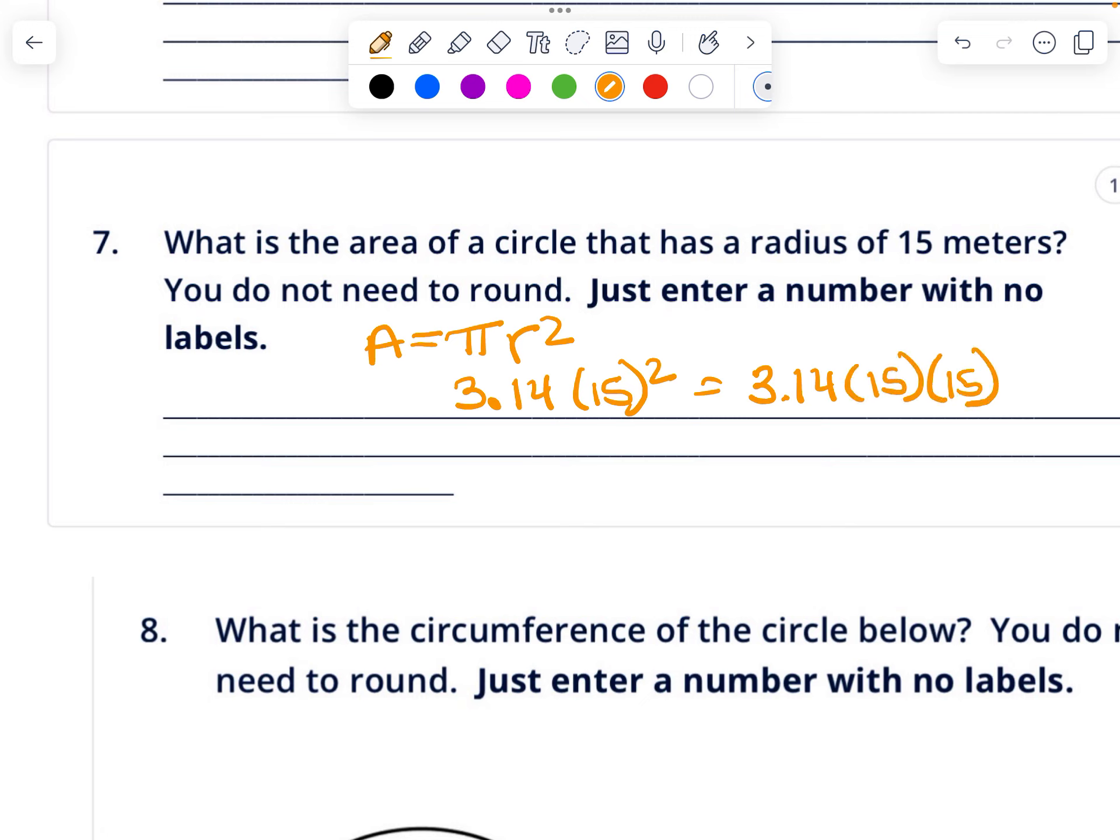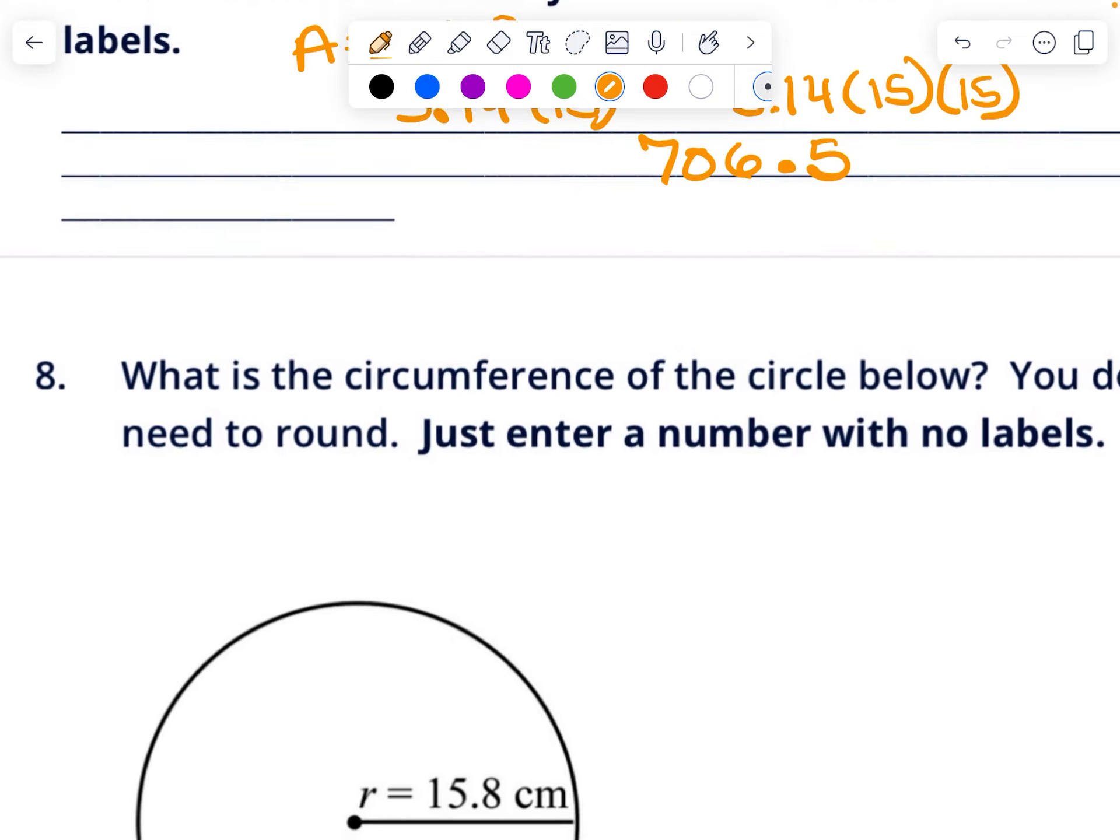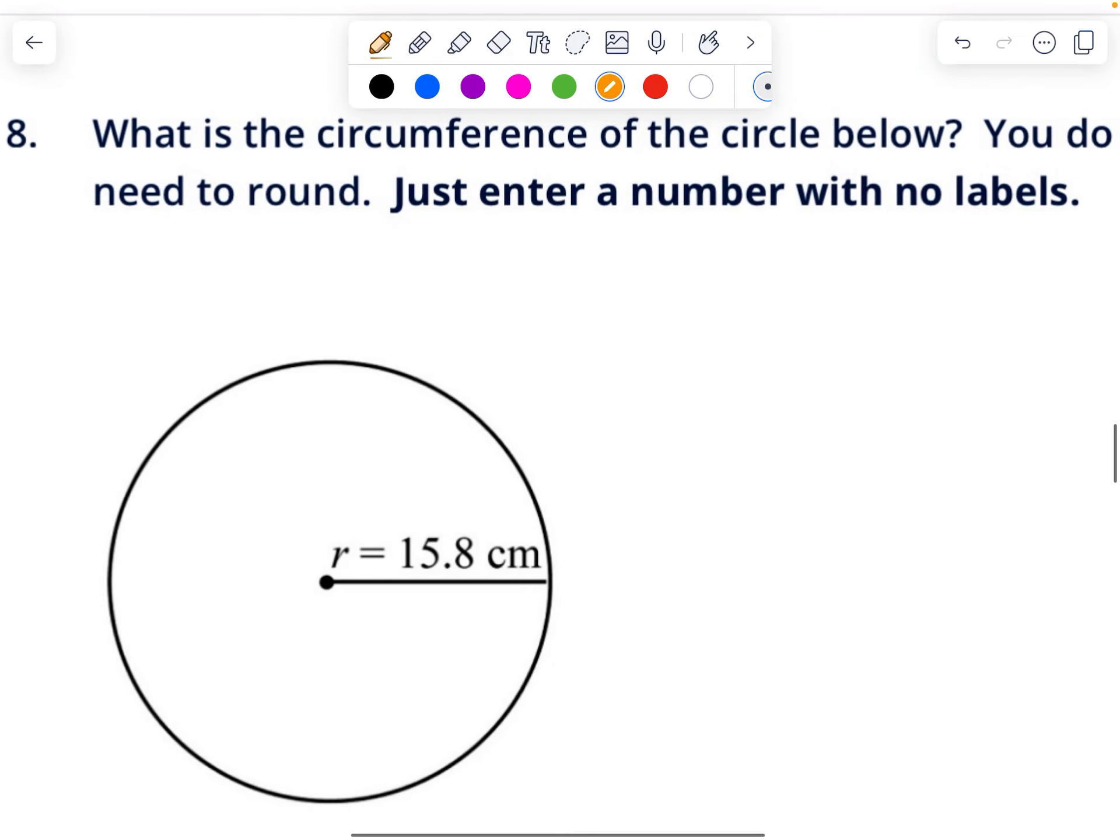What is the circumference of this circle? We talked about the formula already, it's pi times diameter. This though is radius. The diameter, which would be all the way across, is 15.8 times 2, which is 31.6. So we're going to do pi times 31.6, and that gives us 99.224.